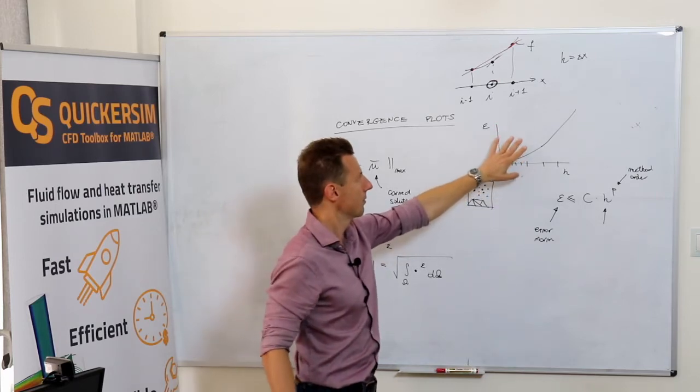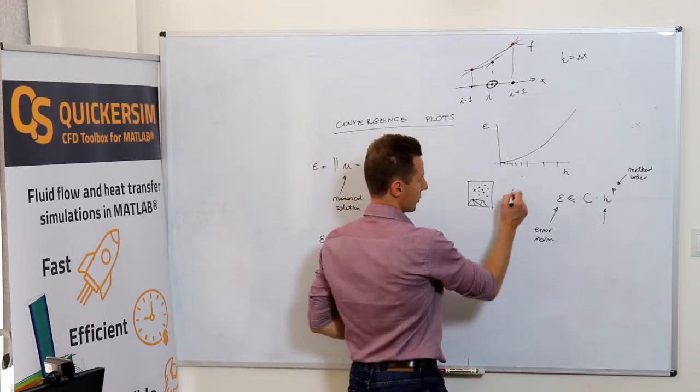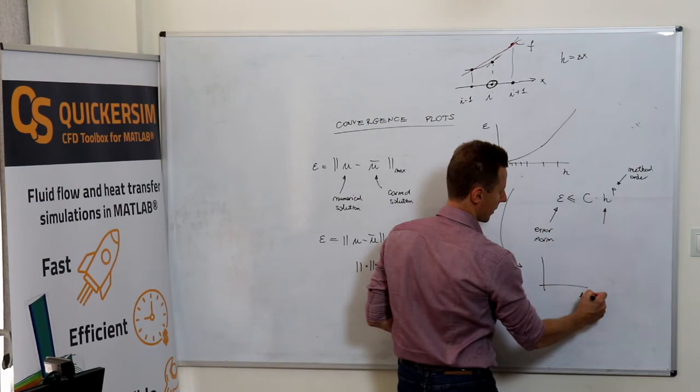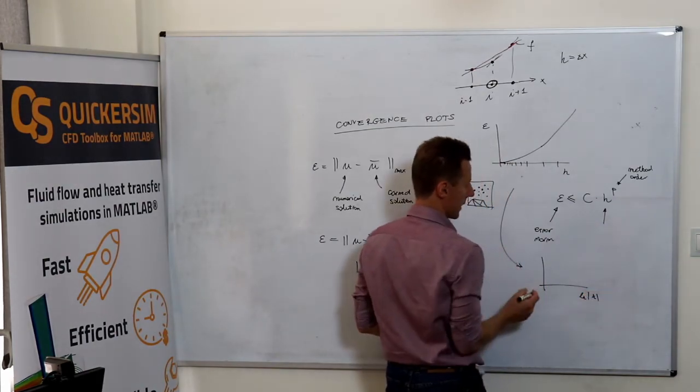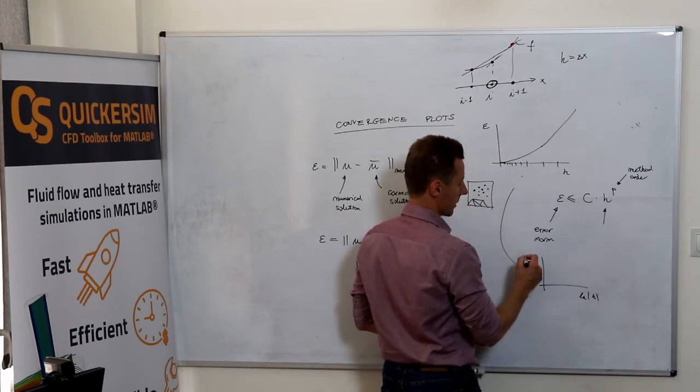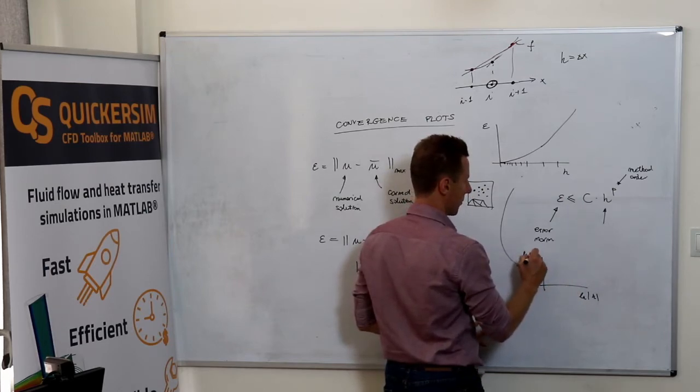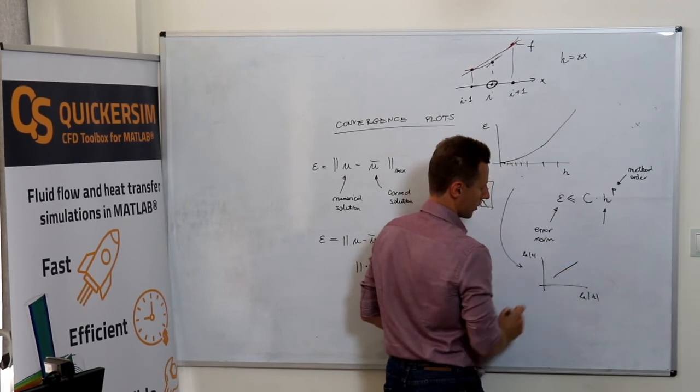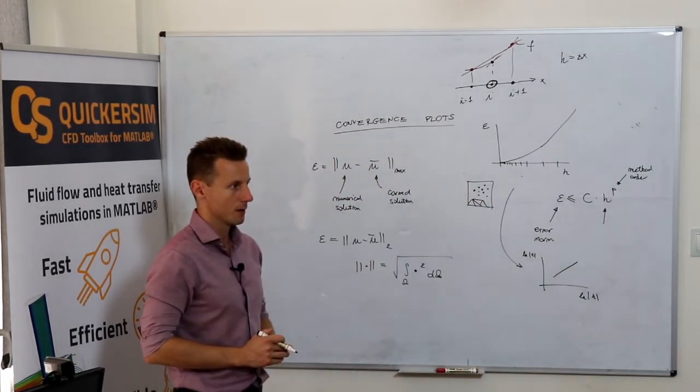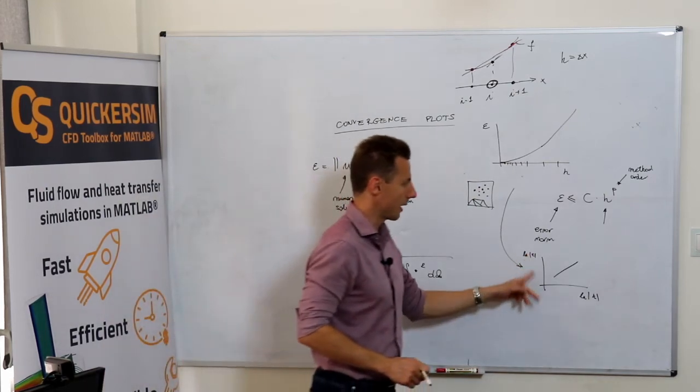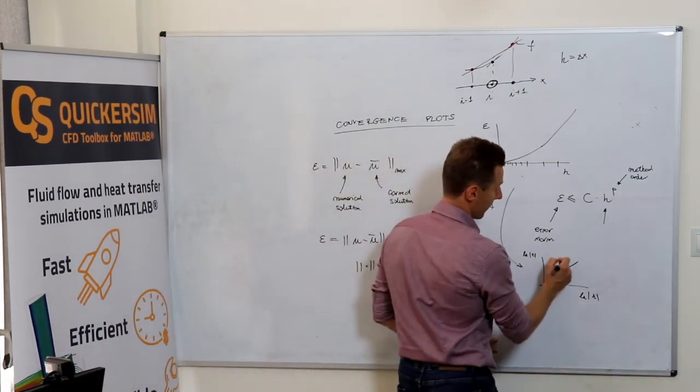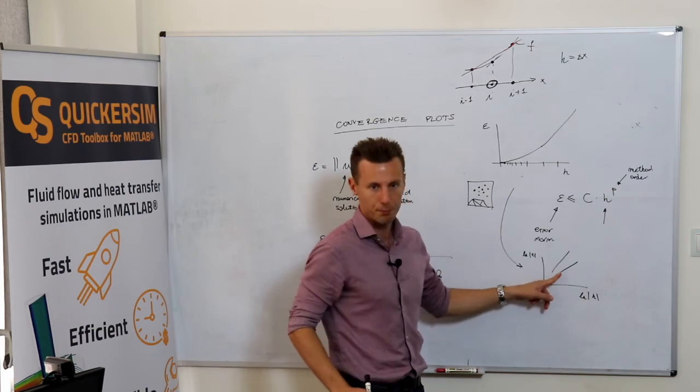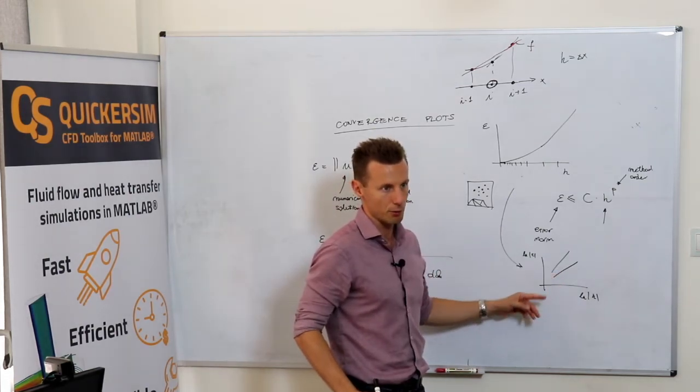Very very often, and I would say in most cases, these plots are plotted differently. Usually you take the logarithm of the discretization step and you take the logarithm of the error, and what you would see in such a case, you should end up with a linear relation in the double logarithmic plots. And the nice thing is that then the slope on the plot shows you exactly the order of the method.